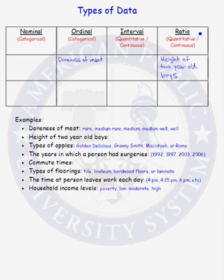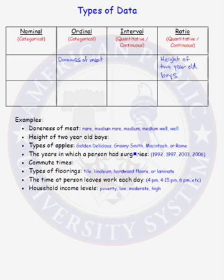Our next data type example is types of apples: Golden Delicious, Granny Smith, Macintosh, or Rome. These are labels or different categories of apples, but there is no natural ordering to Golden Delicious, Granny Smith, Macintosh, or Rome. Therefore, type of apple is a nominal data type.